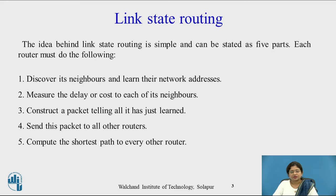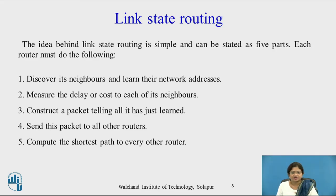The basic idea behind link state routing is simple and can be stated in five parts. Each router must do the following steps: first, discover its neighbors and learn their network addresses; second, measure the delay or cost to each of its neighbors; third, construct a packet containing all it has just learned; fourth, send this packet to all other routers; and fifth, compute the shortest path to every other router.